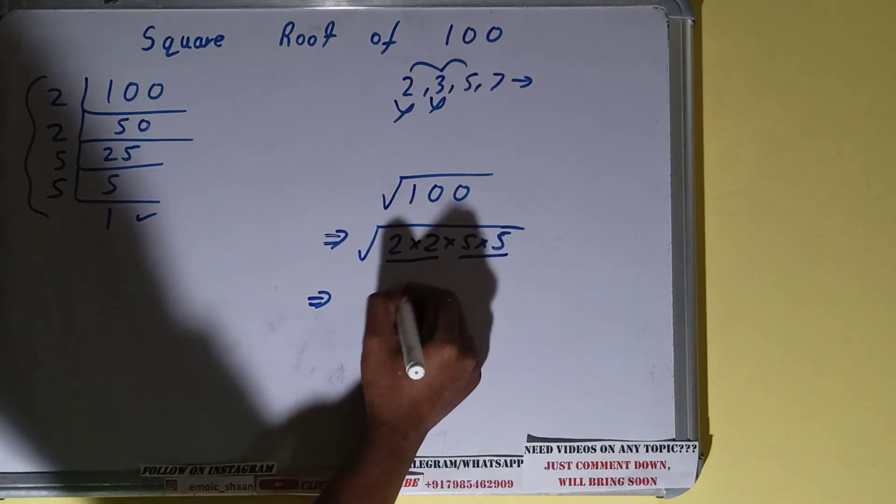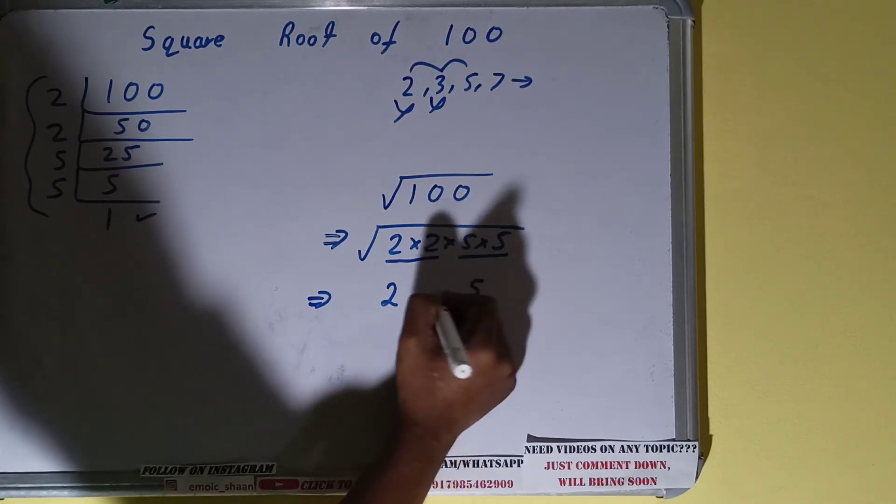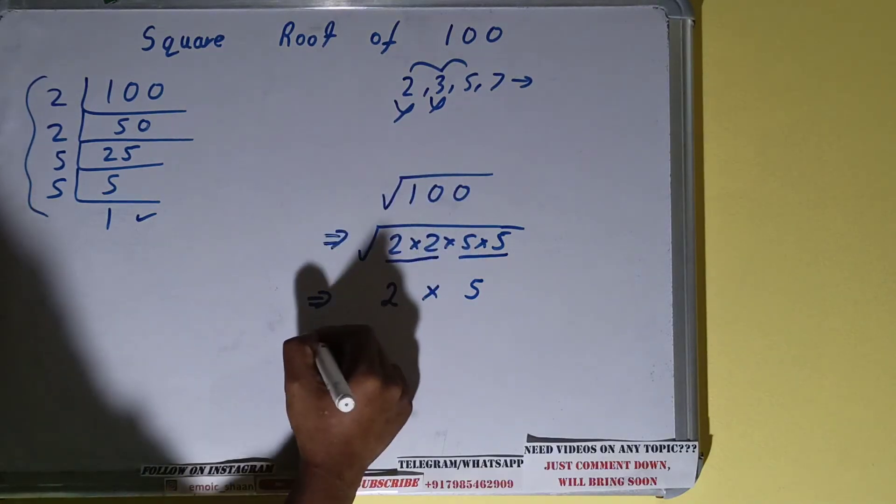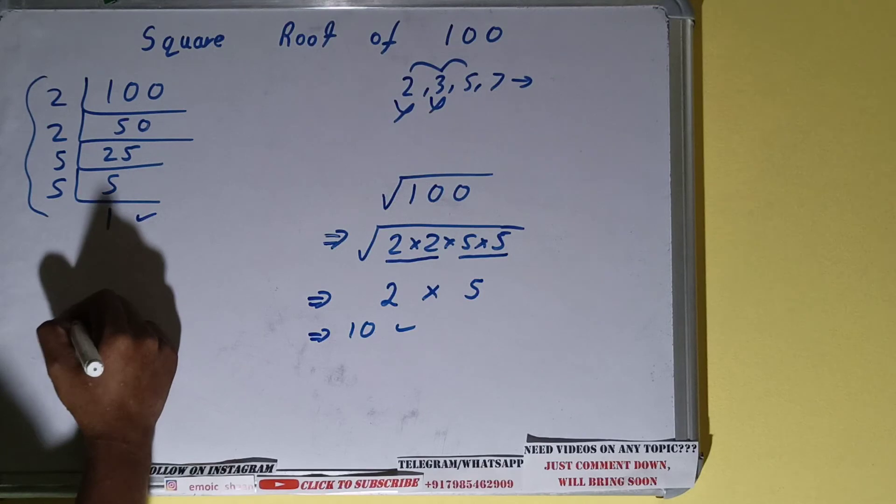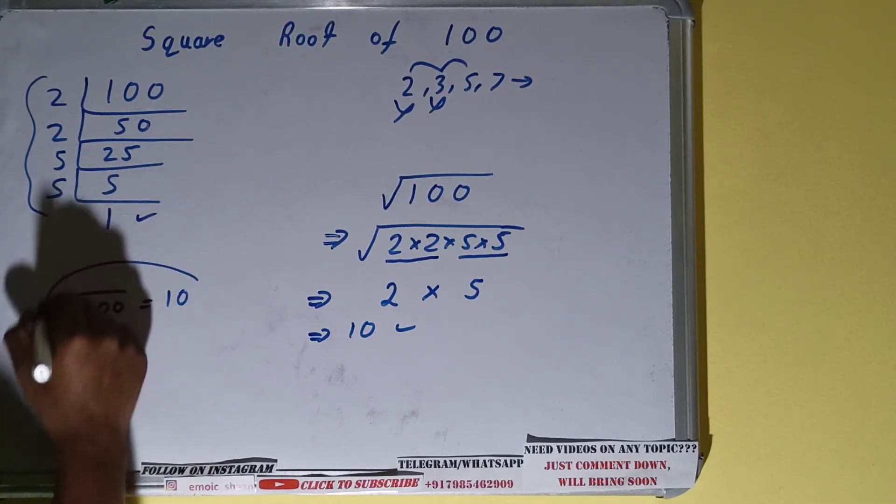The next thing you need to do is for every pair write one number. This is pair of 2, so write 2. This is pair of 5, so write 5. And in between there is a multiplication sign, so write that. So 2 × 5 is 10, so your answer will be 10. So you can write square root of 100 is equal to 10.